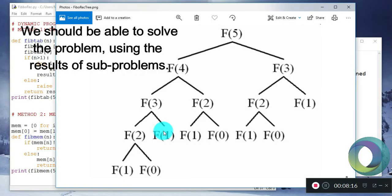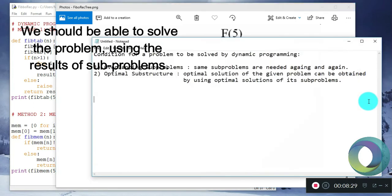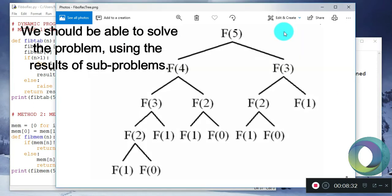So if you can express F of 5 in any expression involving F of 4, F of 3, F of 2, F of 1, F of 0, then the function can be optimally represented in the form of its subproblems. If F of 5 could not have been broken down in terms of F of 4, F of 3, then we could not have applied dynamic programming to this problem.